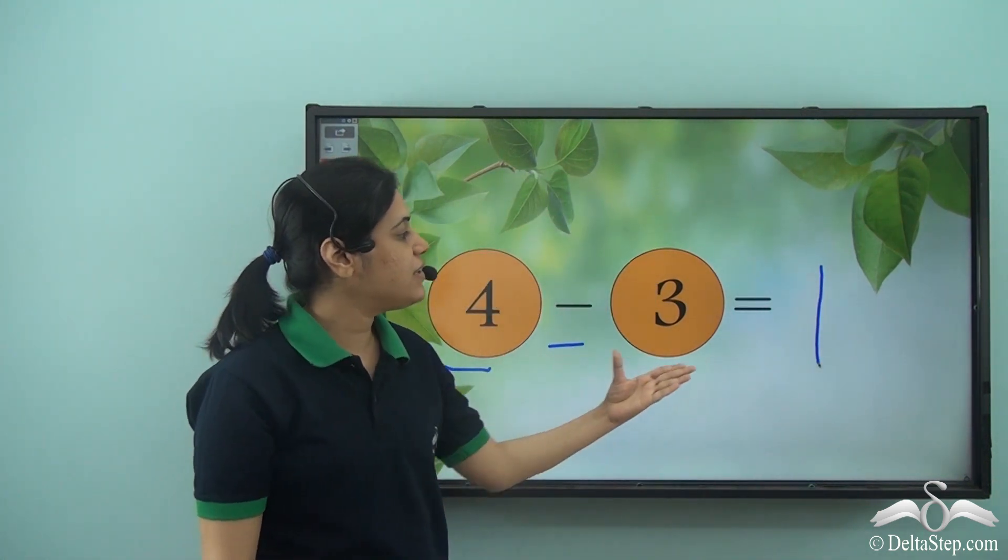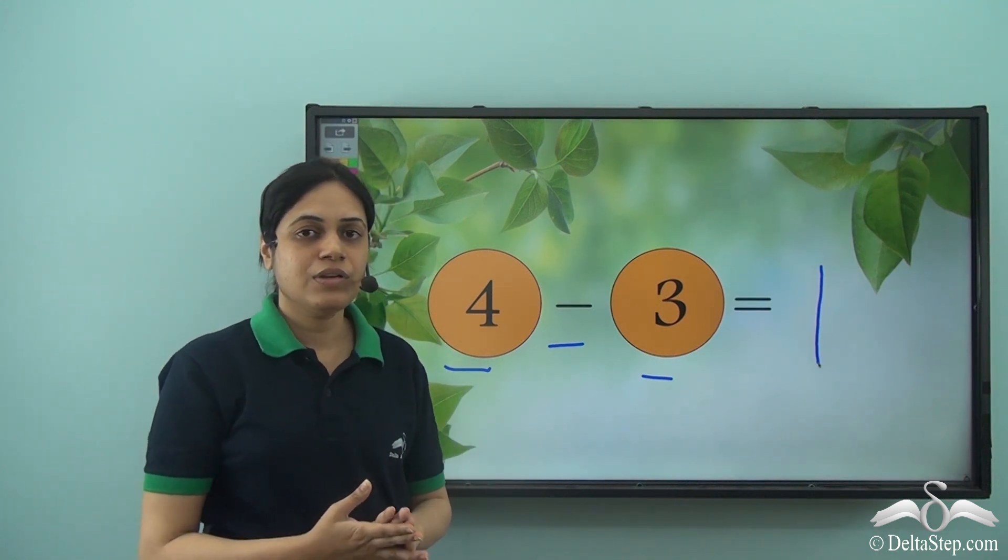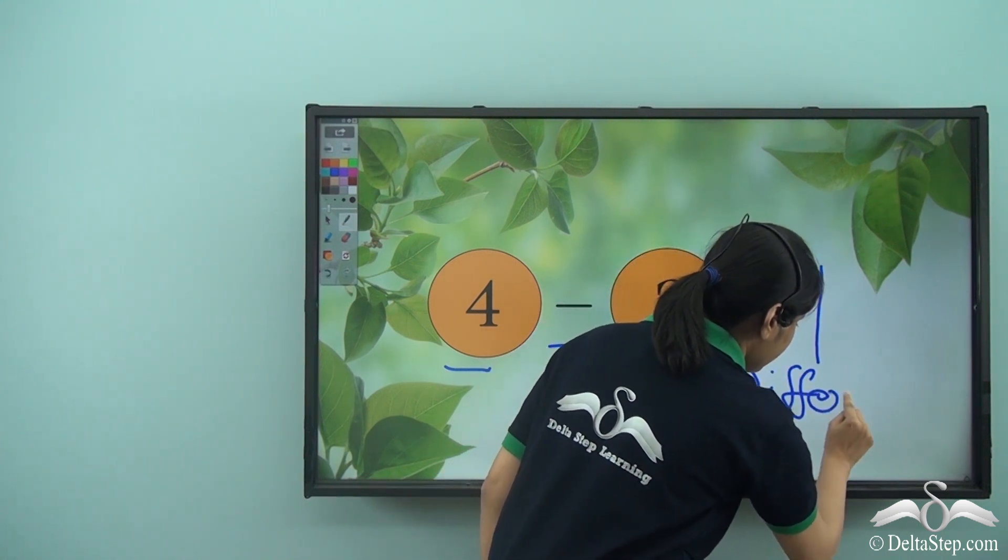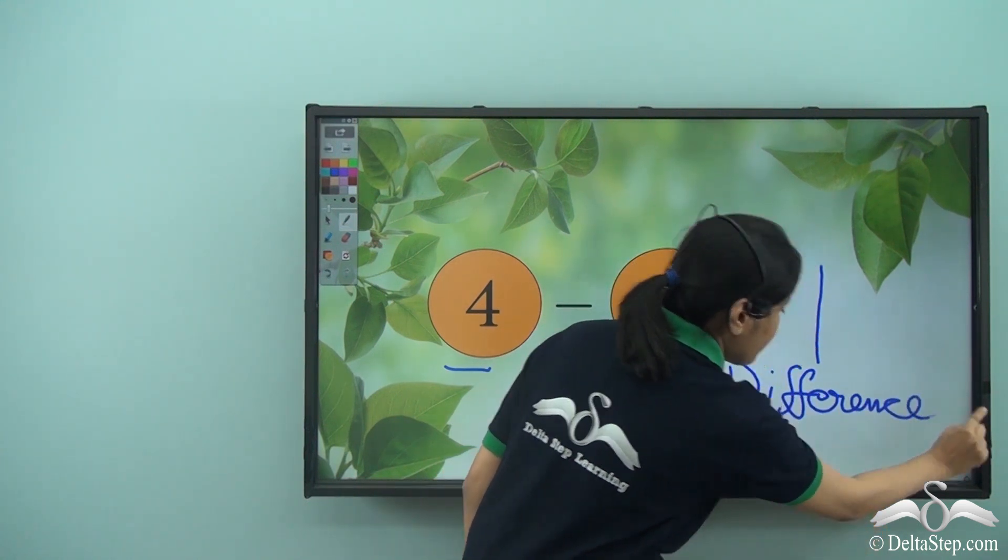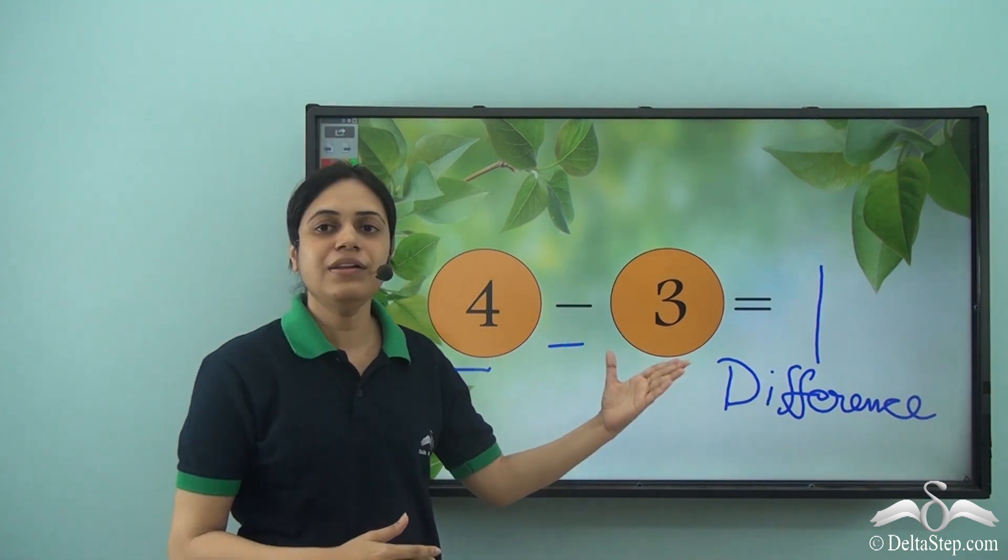So four minus three is one. And what do we call one? One is the difference. One is the difference of four and three.